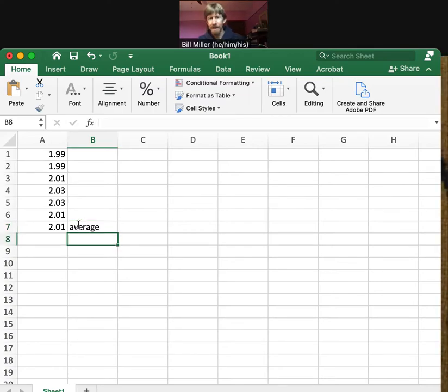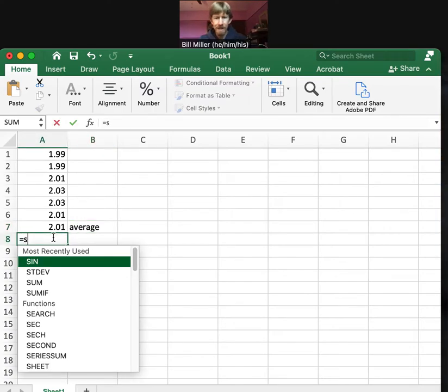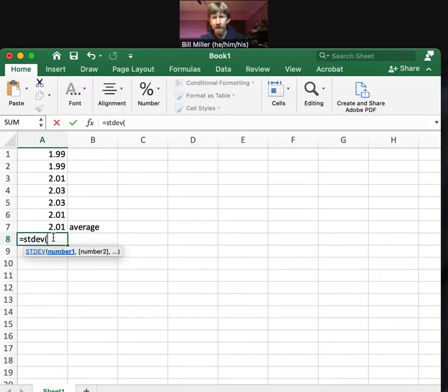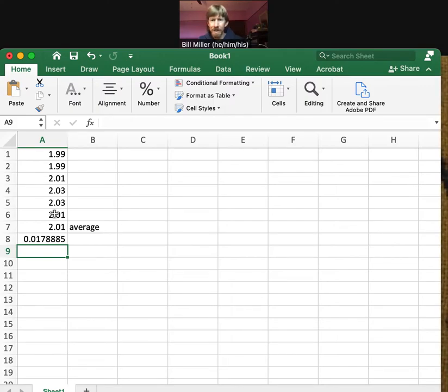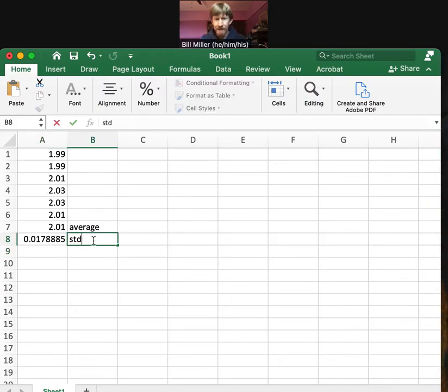Equals STDEV, open parenthesis, and don't get your average, just your six values. My standard deviation is 0.017, et cetera. To two decimal places, my standard deviation is going to be 0.02. I'll just note here STDEV to keep track of what's in my table here.